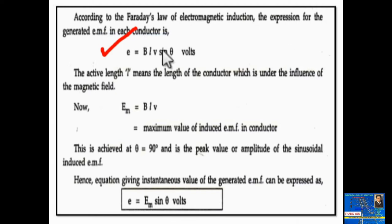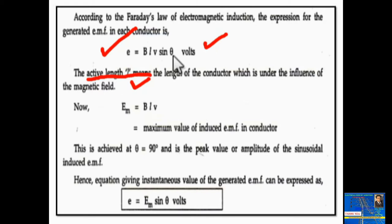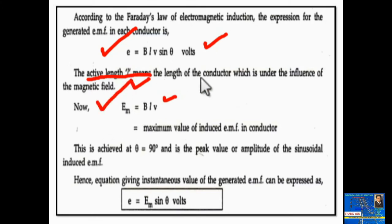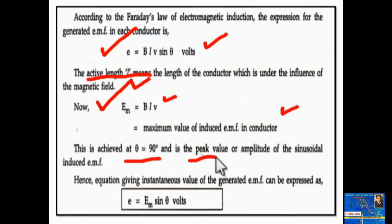The expression for EMF in a conductor is e = BLv sinθ volts, where L is the active length of the conductor under the influence of the magnetic field, v is the velocity with which the coil is rotating, B is the flux density, and θ is the angle between the conductor and the magnetic field. When θ = 90°, the coil is perpendicular to the magnetic field and maximum EMF is induced, equal to BLv.